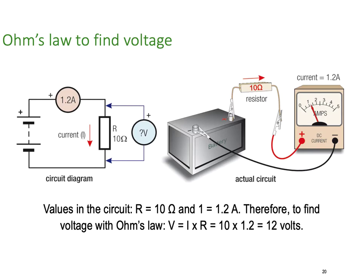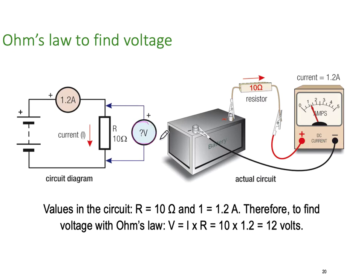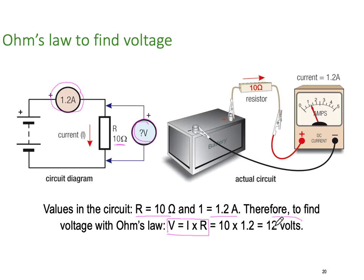Let's do another quick example, this time looking for the voltage across the resistor. We know the current through the resistor is 1.2 amps from our ammeter, and we have a 10-ohm resistor. So R is 10 ohms and current is 1.2 amps. Using V equals I times R: 1.2 multiplied by 10 tells us there is 12 volts being dropped across the resistor.